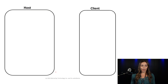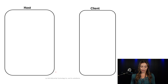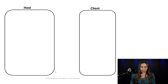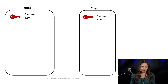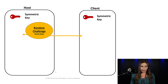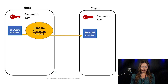Here we have a representation of the host device and the client device in the field. For the host we'd have a SHA-105 device on it, and for the client we'd have a SHA-104 or 106, and to start this process we would put a symmetric key in both the host and client device. Then when the devices interface in the field, the host is going to send a random number challenge to the client, and both the host and client will take this random number challenge and hash it with the symmetric key into an algorithm such as SHA-256.